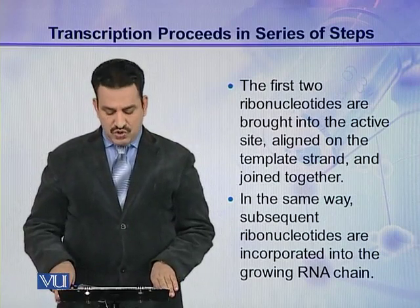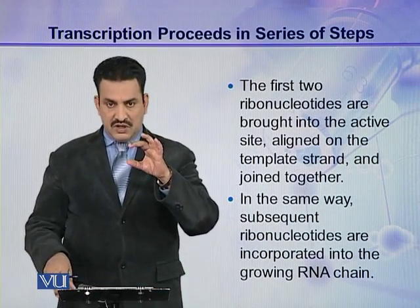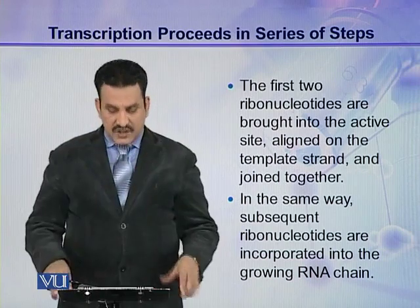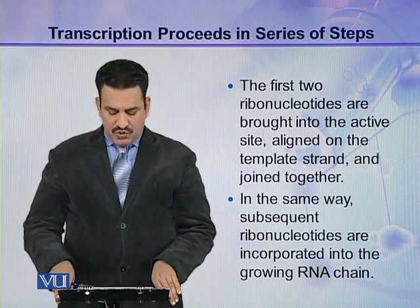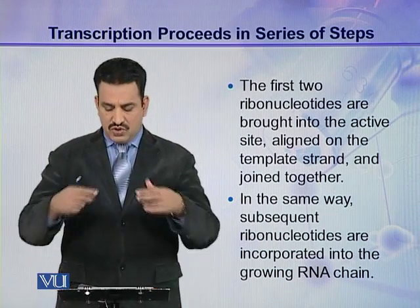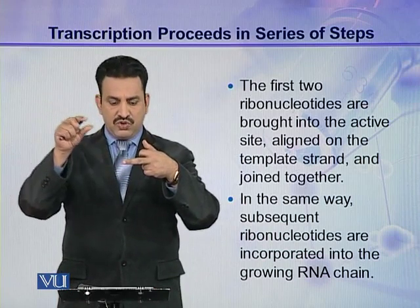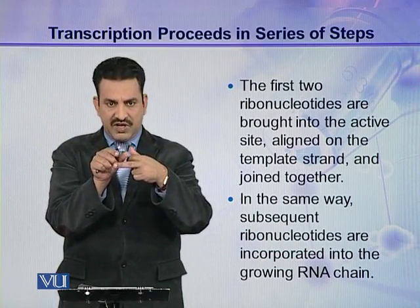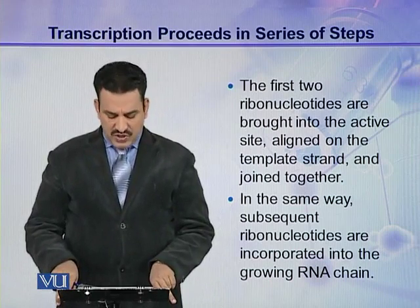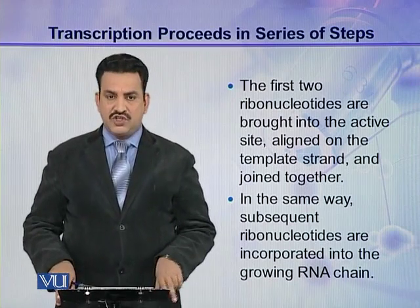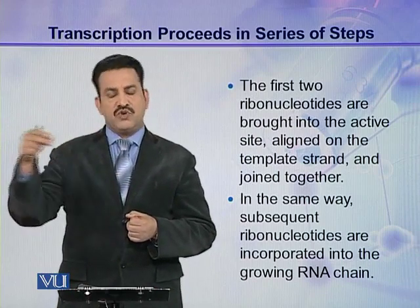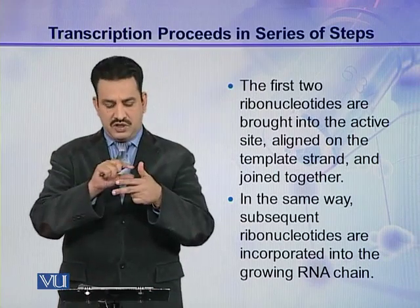The first two ribonucleotides are brought into the active site of RNA polymerase — the cleft at the center of the claw structure. These two ribonucleotides align on the template strand and are joined together. Subsequently, additional ribonucleotides are incorporated into the growing RNA chain, entering and joining with the existing chain continuously.